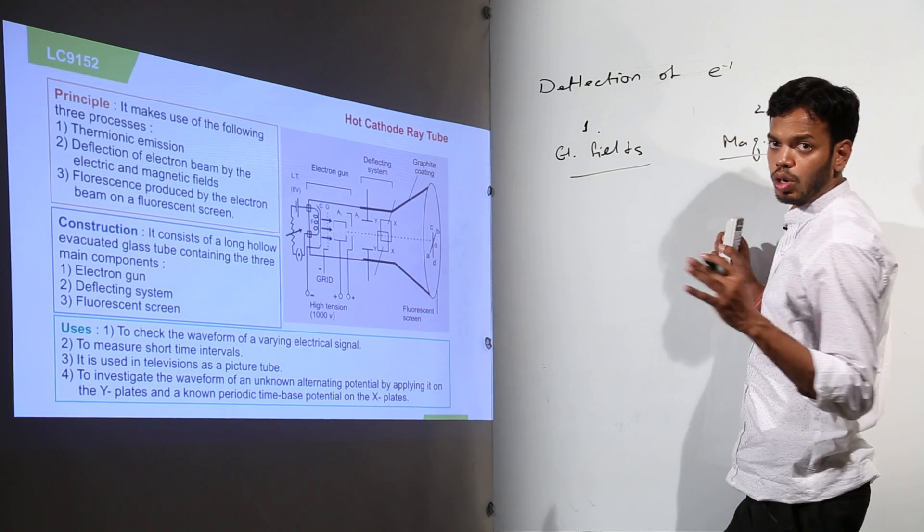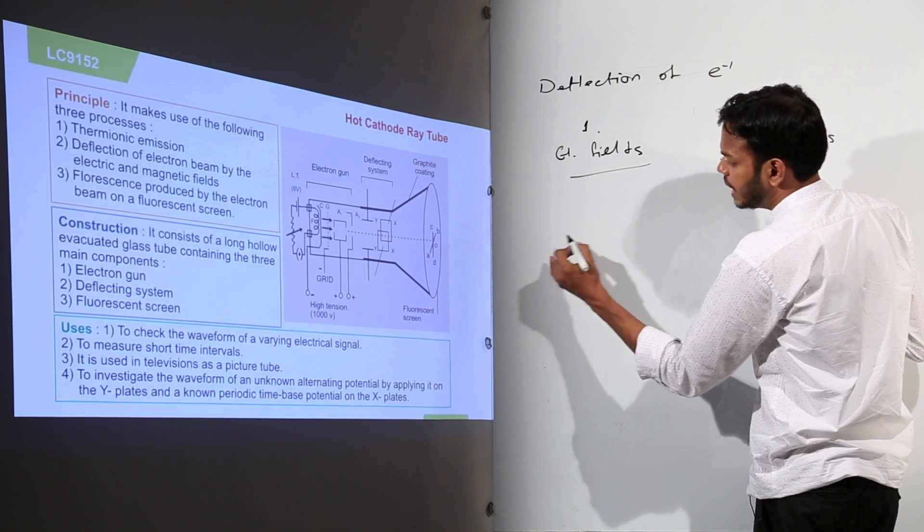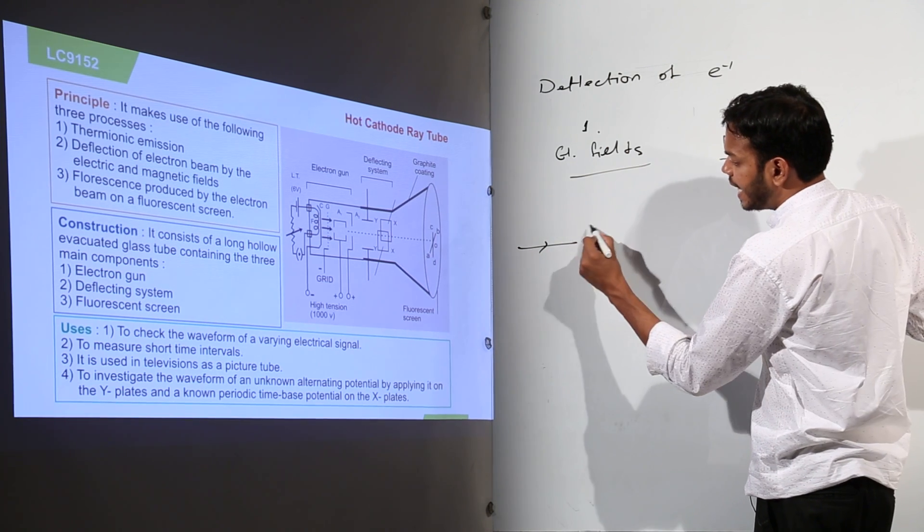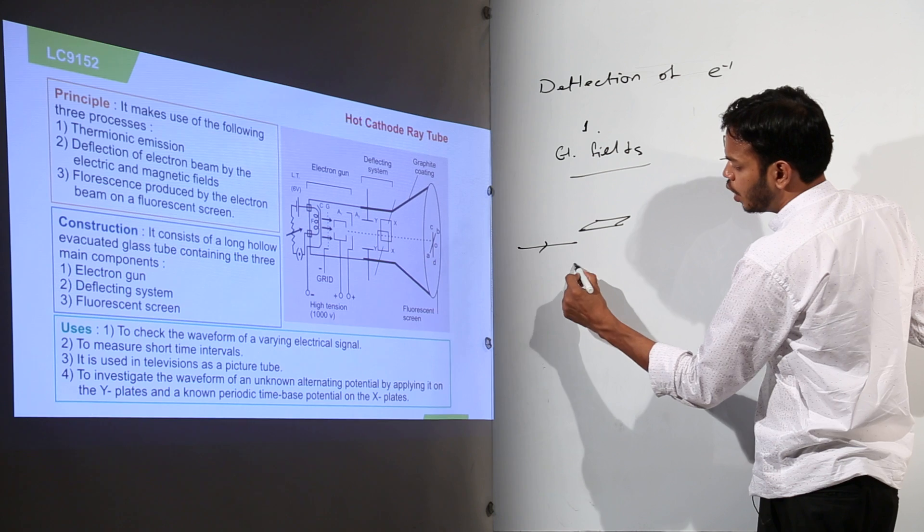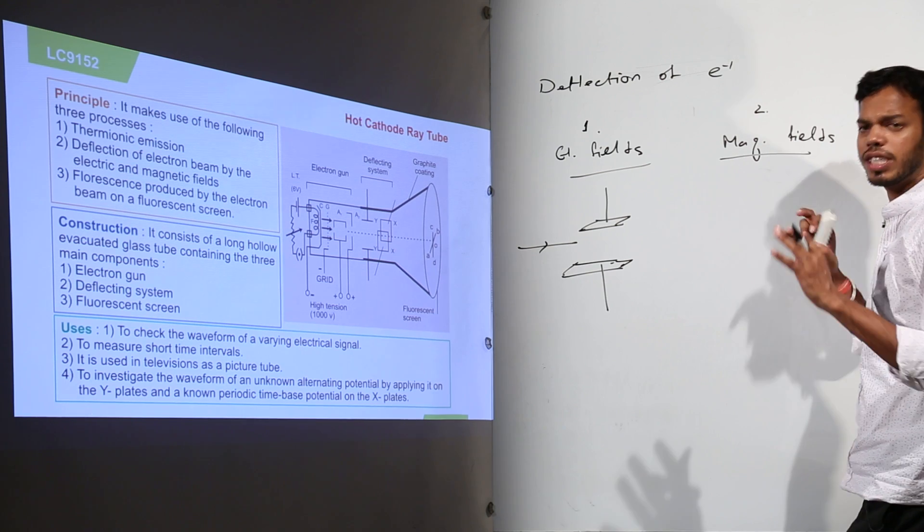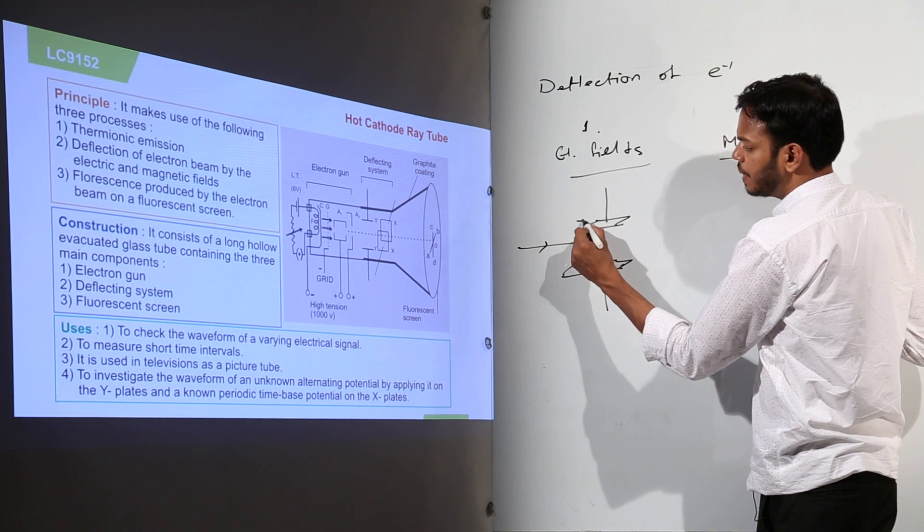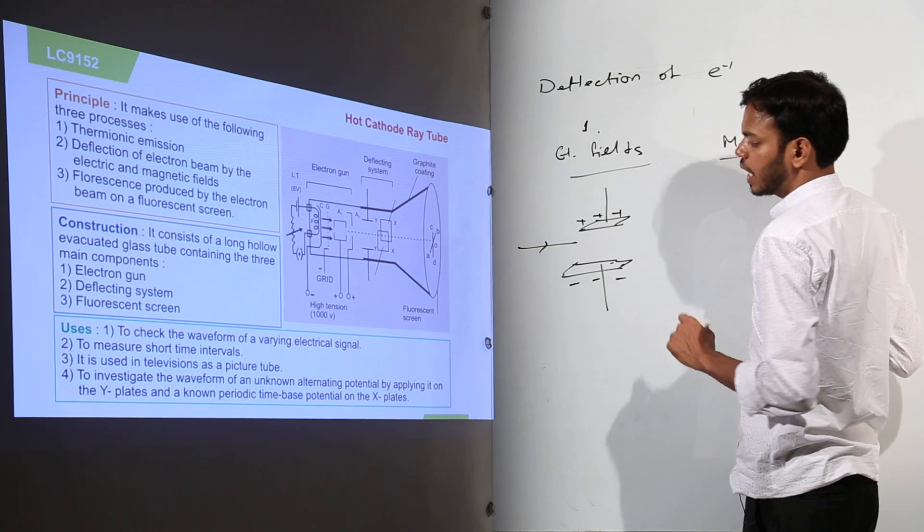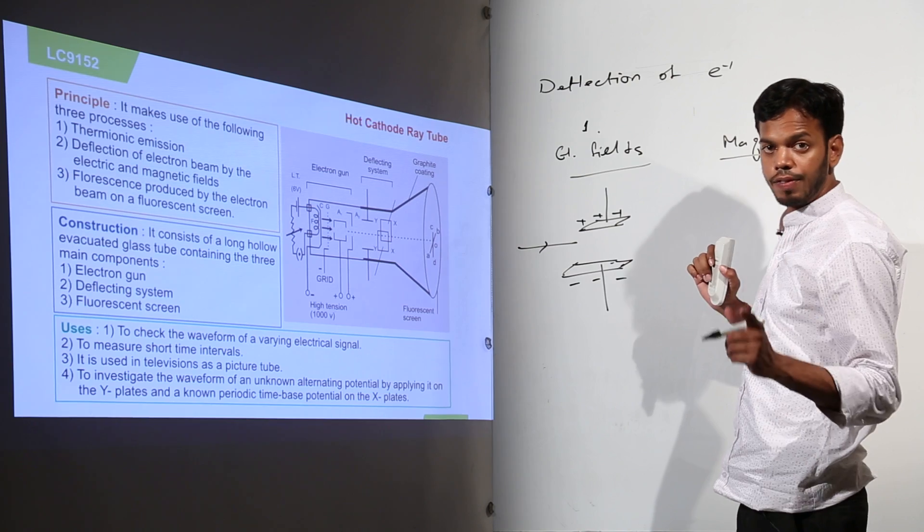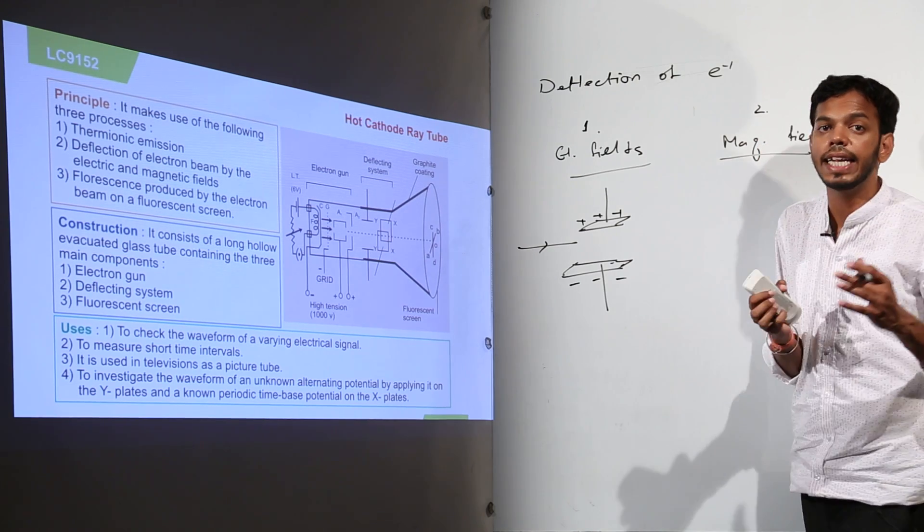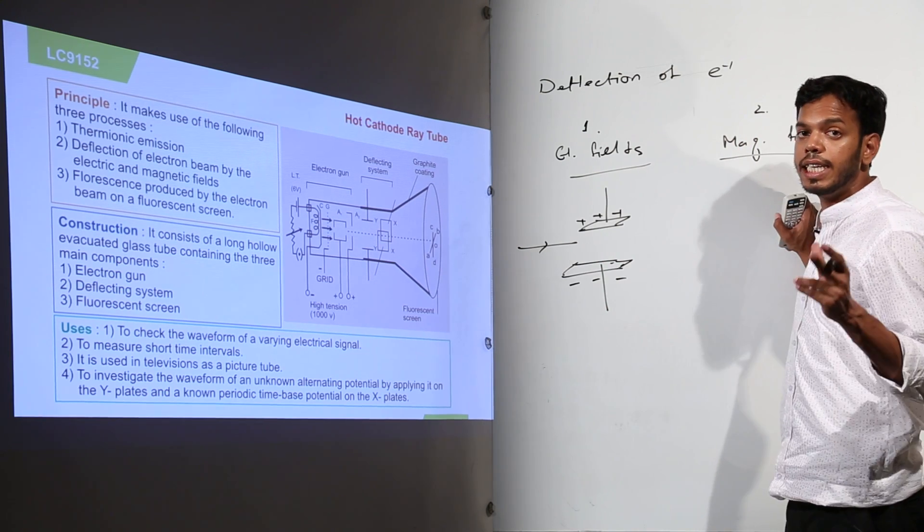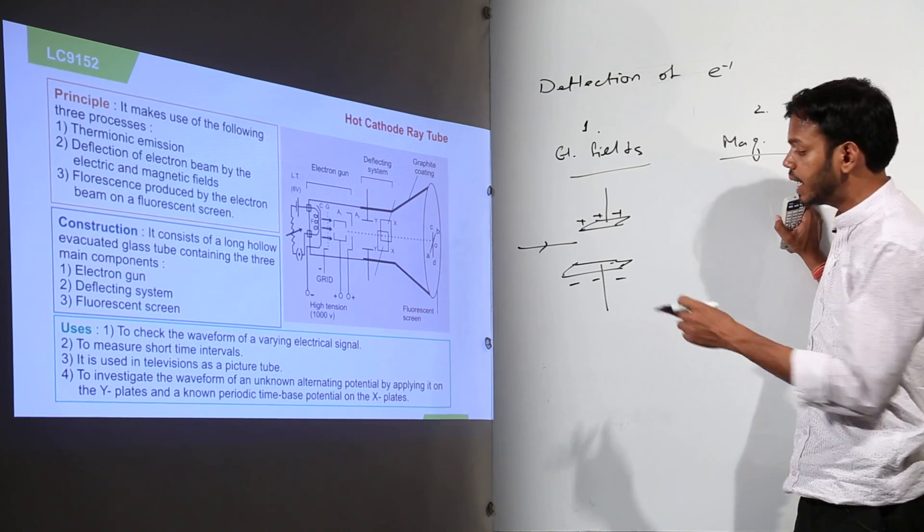We know that electrons are negatively charged particles. That means suppose there is this electron beam coming straight from this point and it has to pass a region of two plates where there is some potential difference applied across these plates. This plate has been given positive charge and this plate has been given negative charge. So what will happen to the direction of flow of electron?